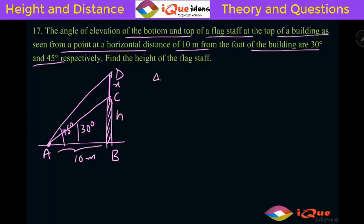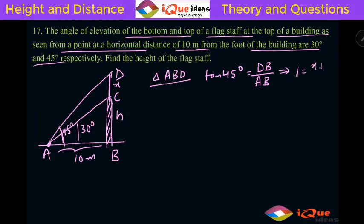Straight away let's take triangle ABD. In triangle ABD we have tan 45° because the angle is 45 degrees. So tan 45° equals DB — the opposite side — divided by the adjacent side AB. Tan 45° is 1, so 1 equals (X plus H) divided by AB which is 10. From here we have X plus H equal to 10. This is one equation.